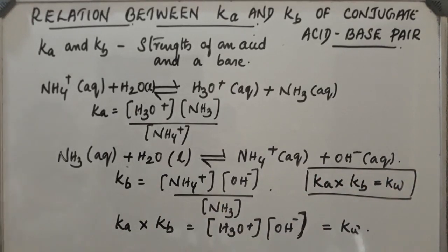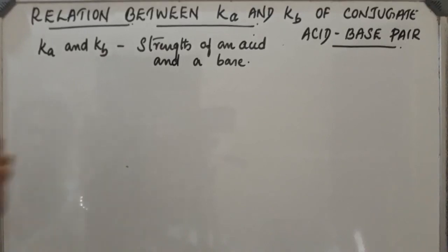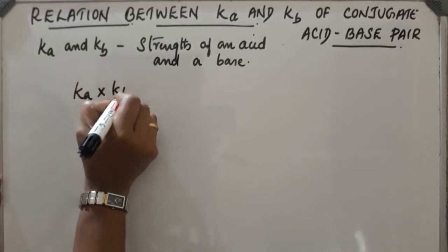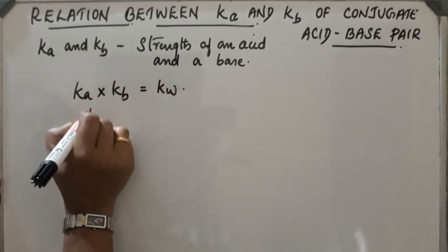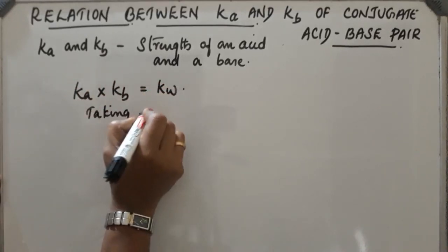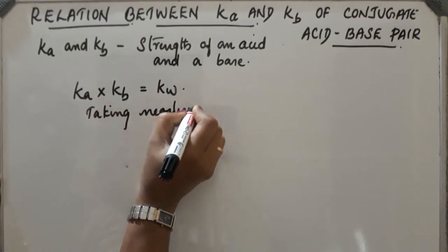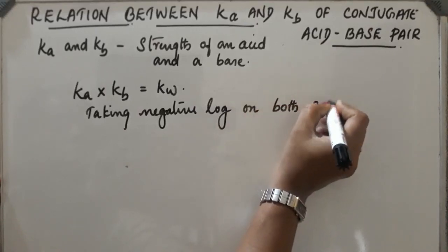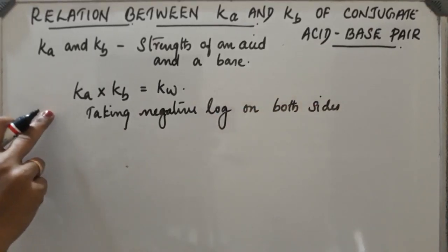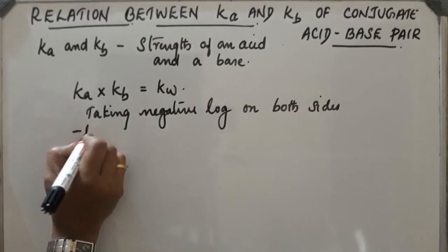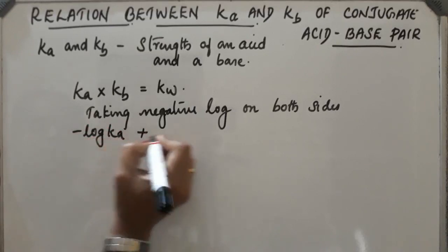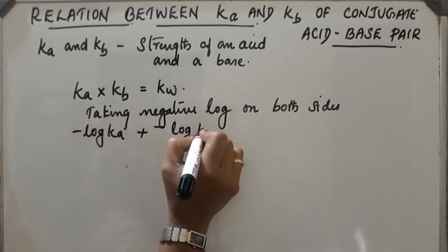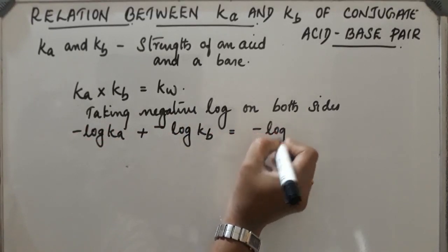This is used to do some problems. Now we are taking the negative logarithm on both sides. Ka × Kb = Kw, taking negative log on both sides. What happens? -log Ka + -log Kb = -log Kw.